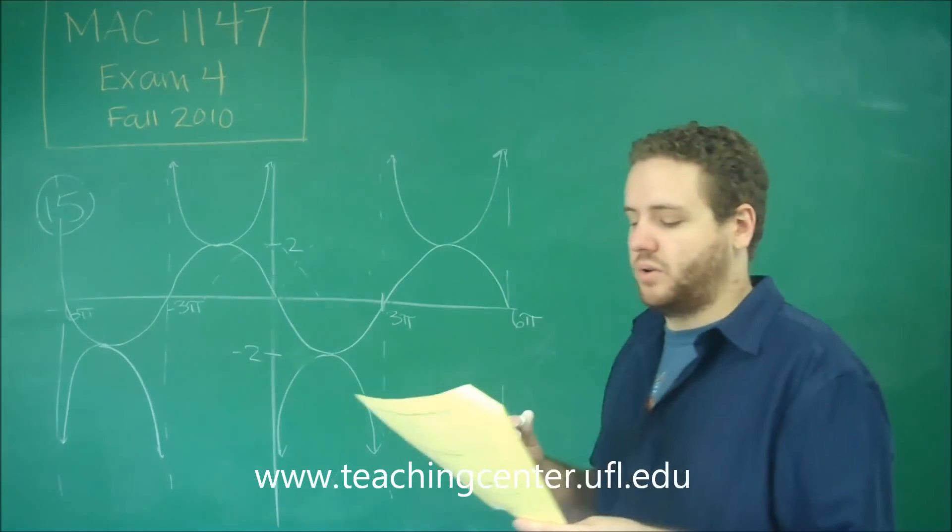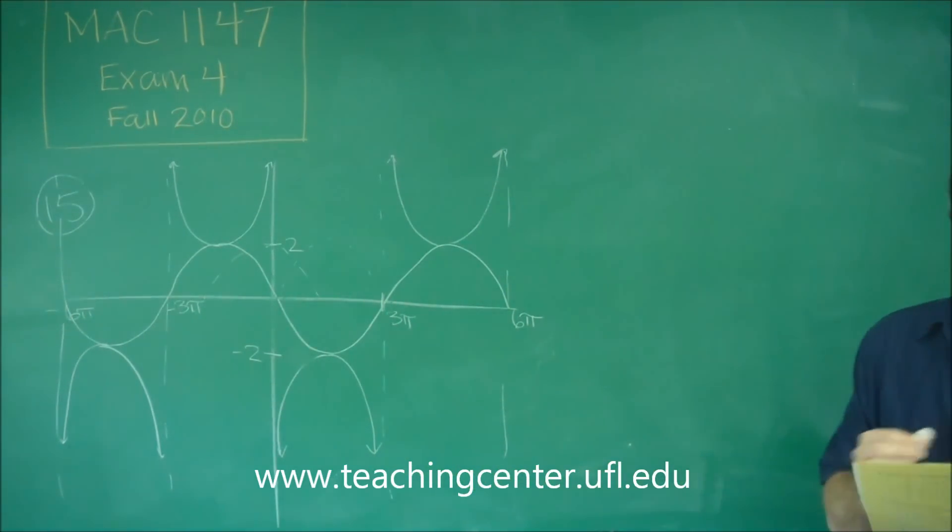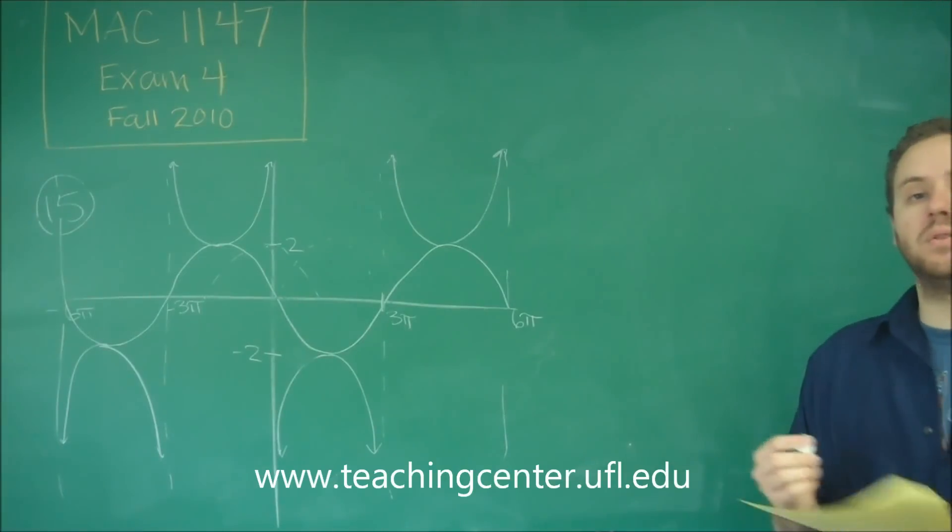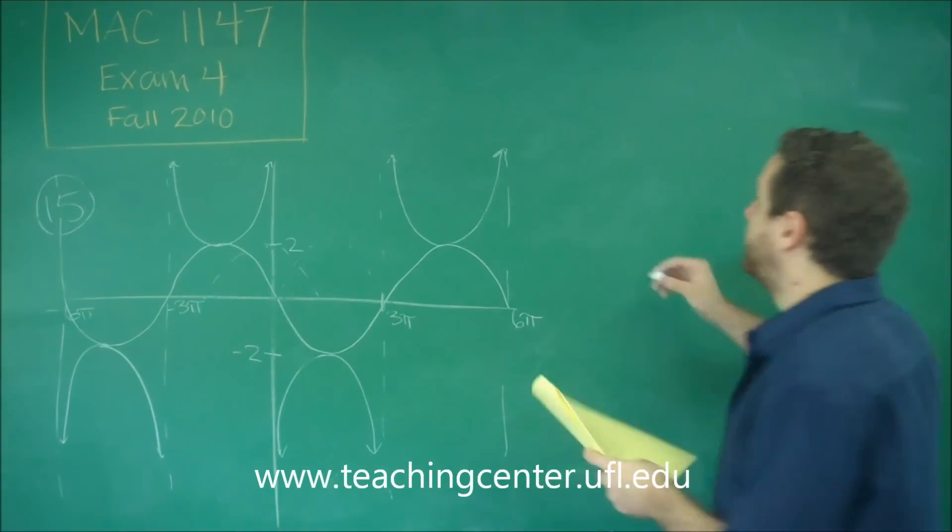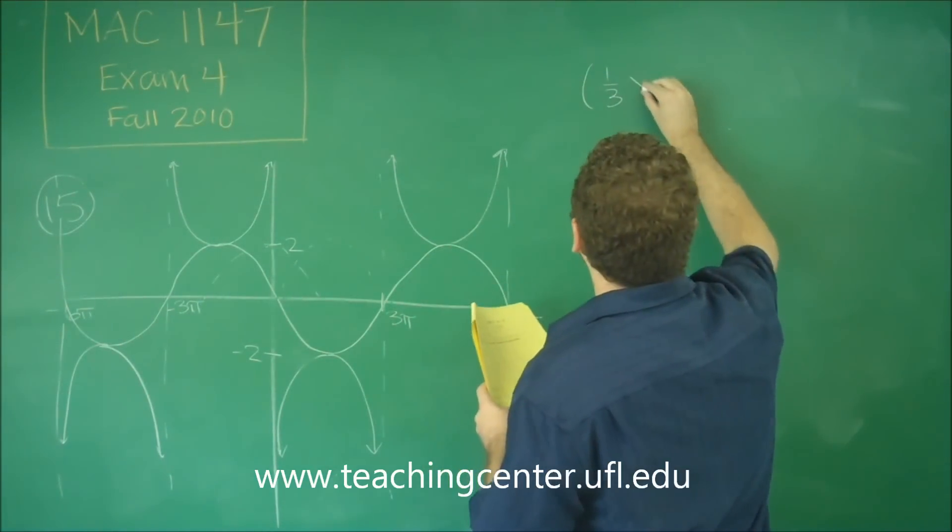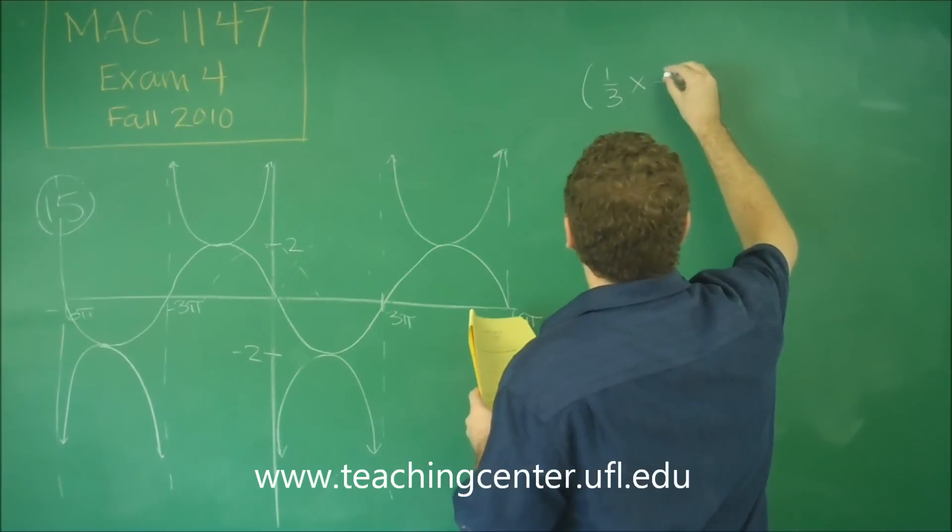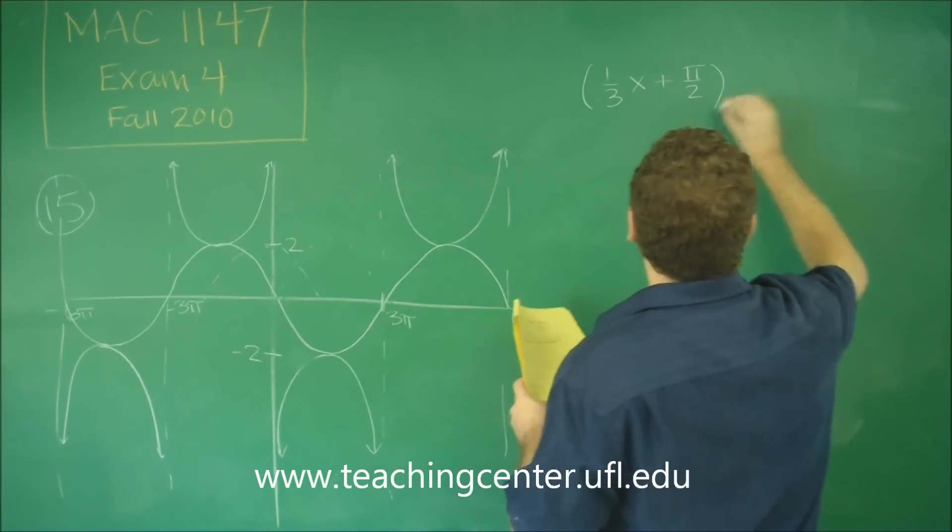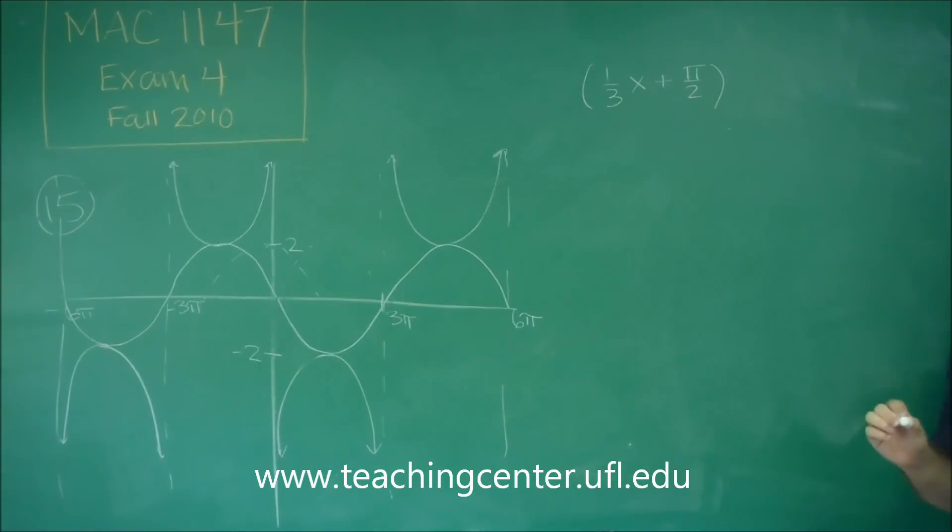So now we're either a cosecant or a secant graph that's shifted left or right, and these factors here are pi over 2. Remember though, that to actually find the phase shift, you have to factor out the number in front first. So I'm just going to take the inside part of all of these, either 1 third x plus pi over 2, or 1 third x minus pi over 2. I'll deal with both, and we'll see what happens.